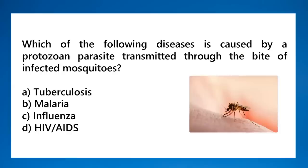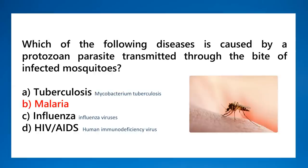Which disease is caused by a protozoan parasite transmitted through the bite of infected mosquitoes? That is malaria. Mosquitoes are vectors for many diseases: malaria, dengue, yellow fever, chikungunya. Tuberculosis is caused by the bacterium Mycobacterium tuberculosis. Influenza is caused by a virus. HIV (human immunodeficiency virus) is also a virus. Malaria is the only one caused by a protozoan parasite — specifically Plasmodium vivax.